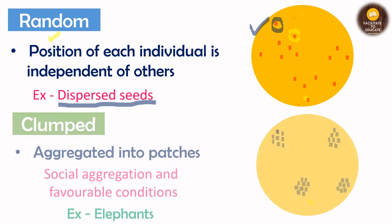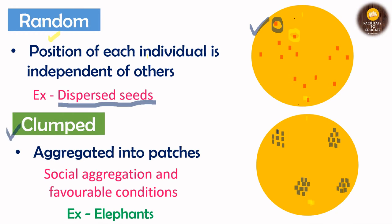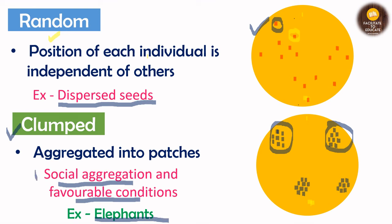The third type is clumped dispersion. In clumped dispersion, individuals are aggregated into patches. It is due to social aggregation or favorable conditions to live in that area. For example, elephants live in clumps or clusters or groups due to social aggregation. So these were the three types of dispersion: uniform, random, and clumped.